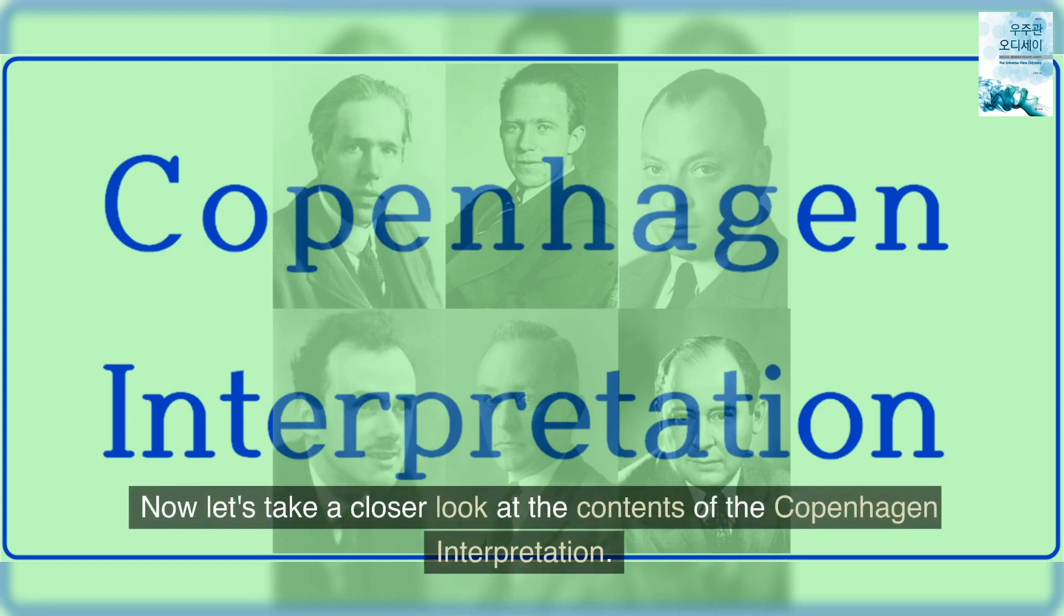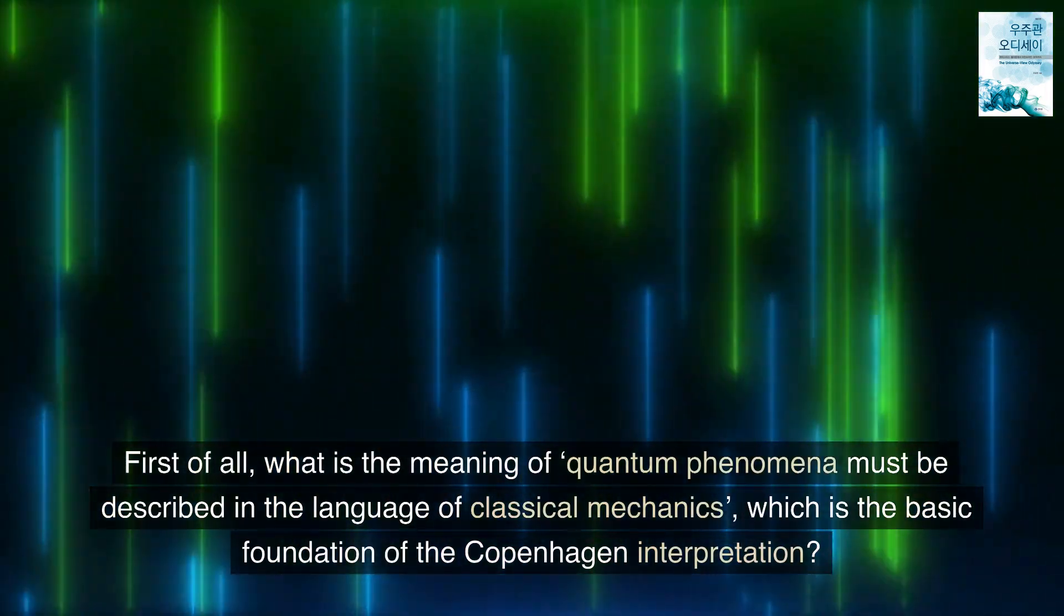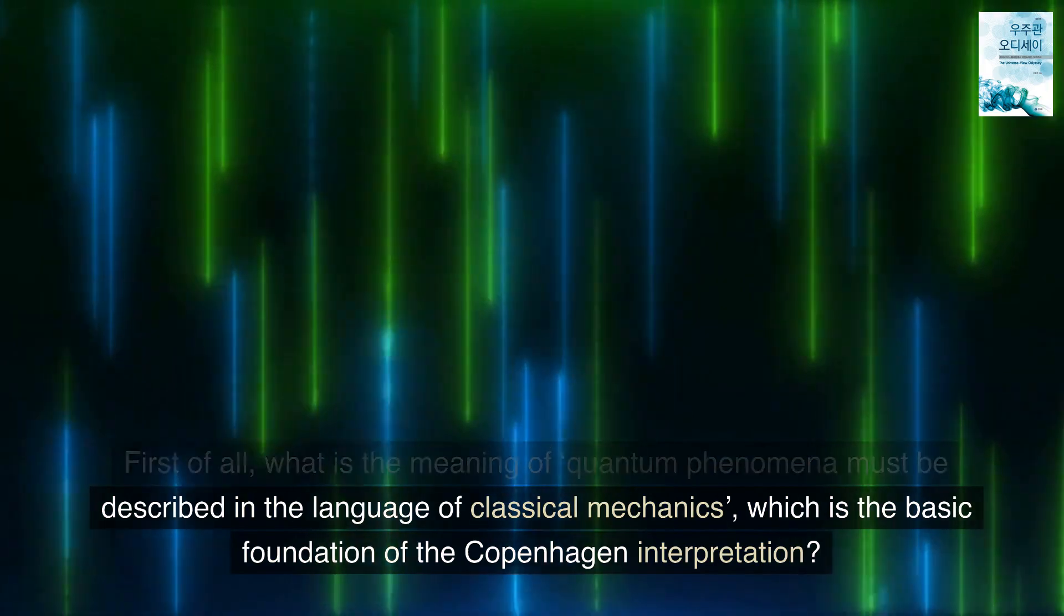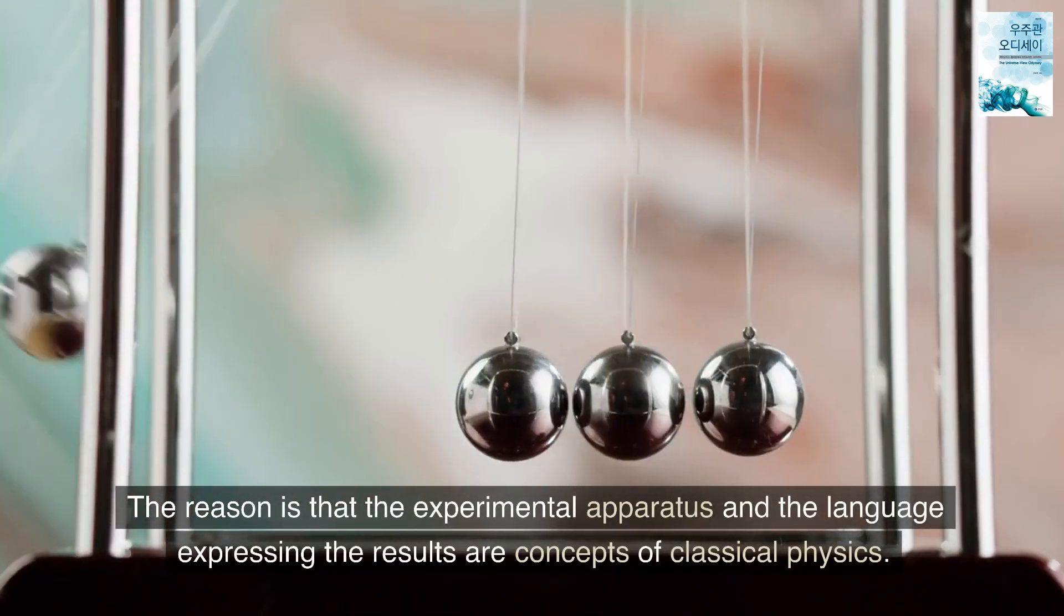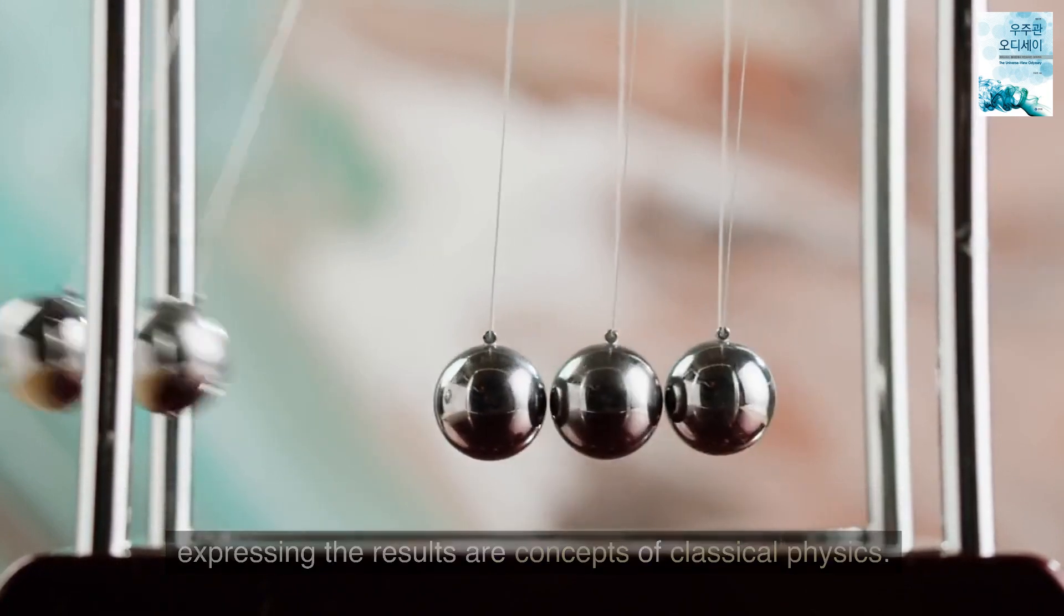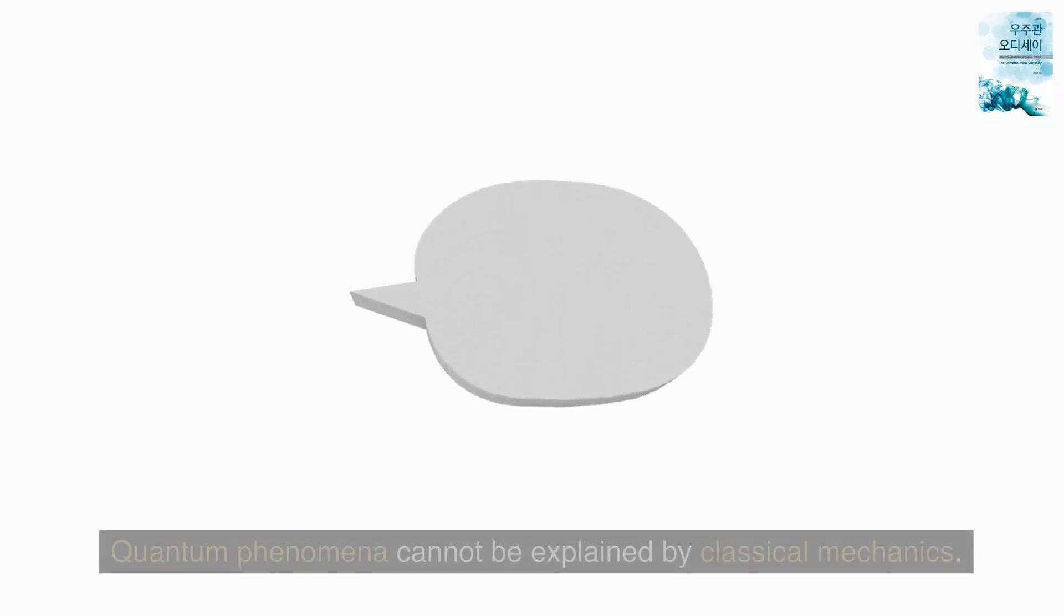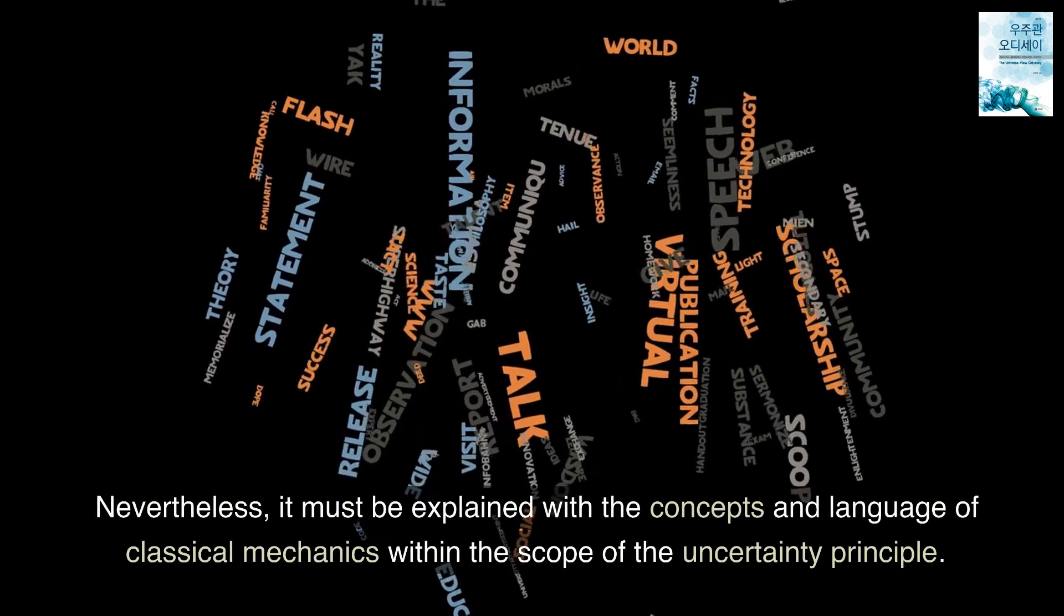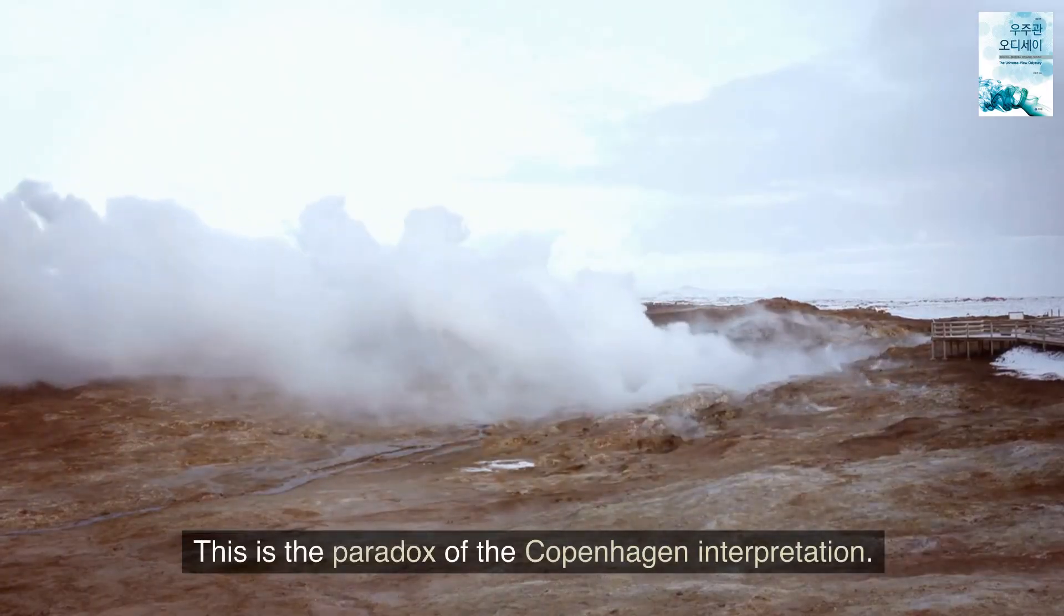Now let's take a closer look at the contents of the Copenhagen interpretation. First of all, what is the meaning of quantum phenomena must be described in the language of classical mechanics, which is the basic foundation of the Copenhagen interpretation. The reason is that the experimental apparatus and the language expressing the results are concepts of classical physics. We cannot communicate in any other language. Quantum phenomena cannot be explained by classical mechanics. Nevertheless, it must be explained with the concepts and language of classical mechanics within the scope of the uncertainty principle. This is the paradox of the Copenhagen interpretation.